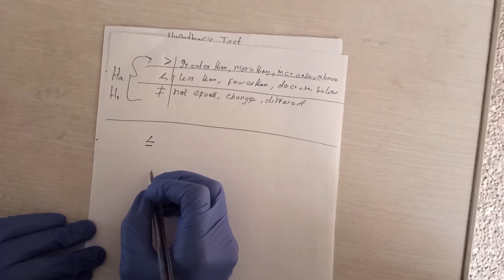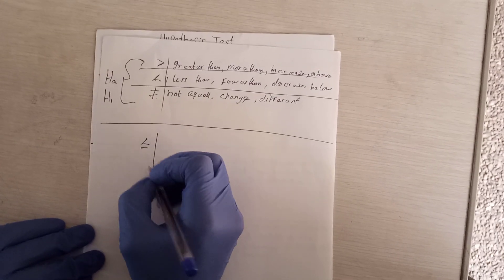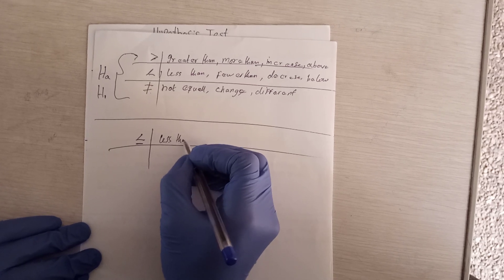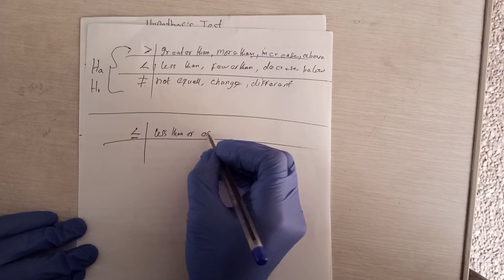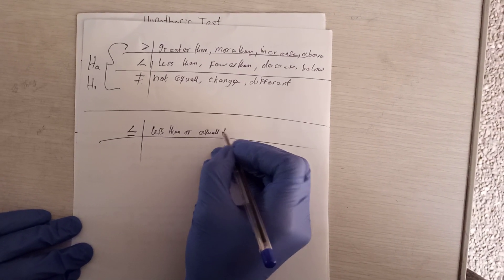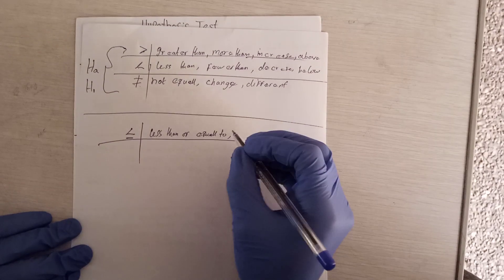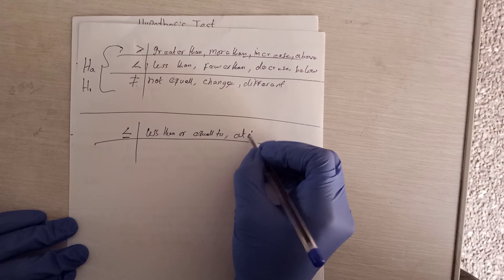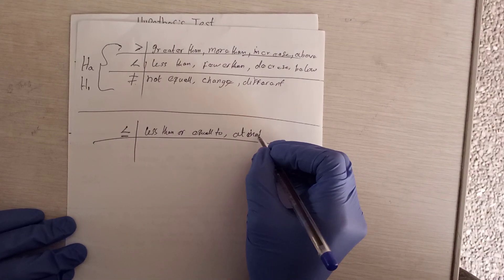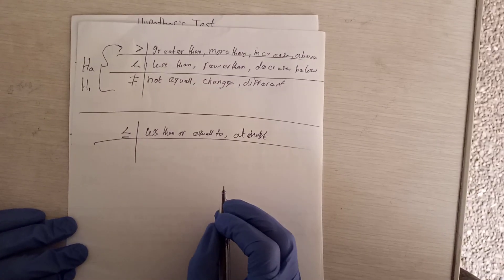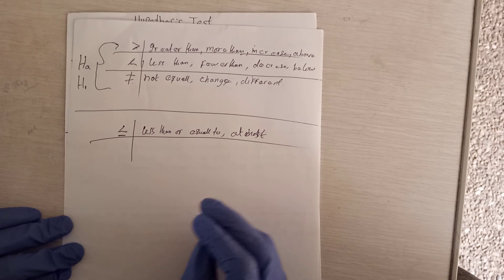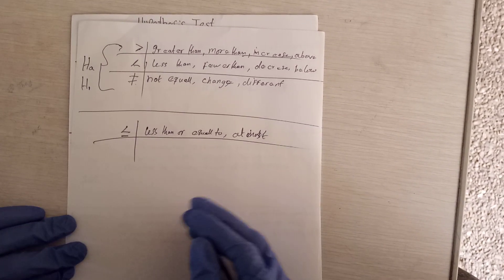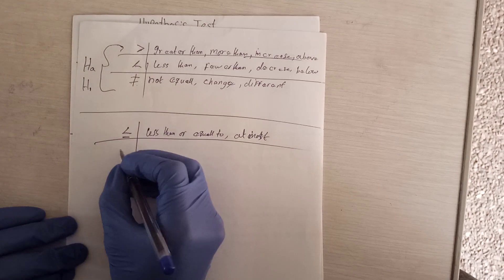Another important thing: the opposite of greater than is less than or equal to. This less-than-or-equal-to sign is also known as 'at most.' When they say it is less than or equal to five, it means it is at most five.